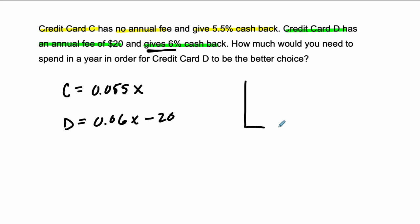So it's a linear equation. I'm thinking that C is like some line like this. D starts out lower because of the negative 20, but it's a little bit steeper. So eventually they're going to be equal, and eventually D is actually going to surpass C. So I want to know when this happens.